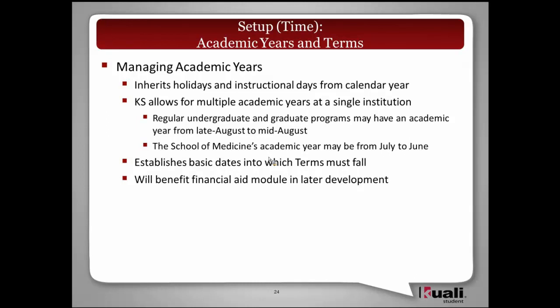KS will also allow for multiple academic years at an institution. Undergraduate programs generally go from late August to mid-August of the following year. But a lot of times there are other programs or schools that have academic years with different time frames, so we want to make sure there's the ability to create different academic years as needed.